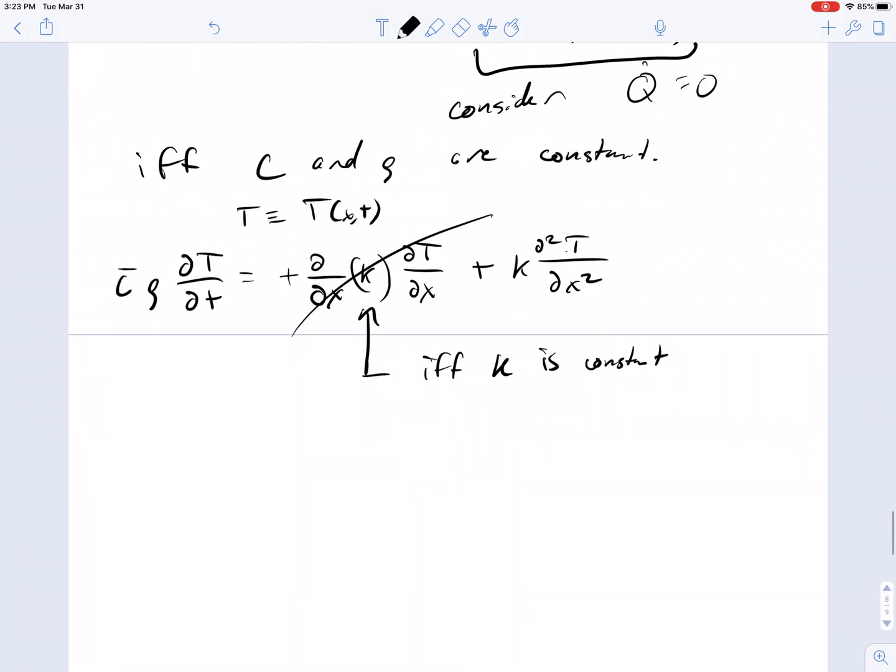And we're left with what's commonly called the heat equation, which relates the change in temperature over time to del squared temperature over del x squared.